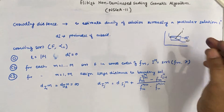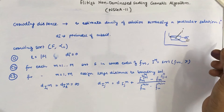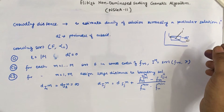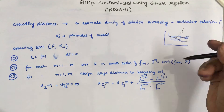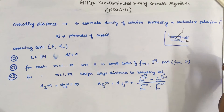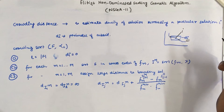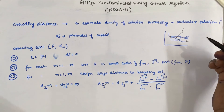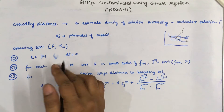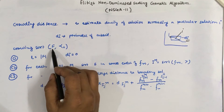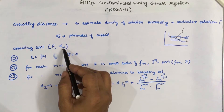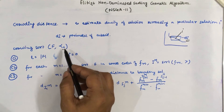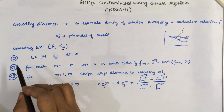In NSGA-2, we generally apply crowding sort based on the crowding distance, and the solutions which have higher crowding distance are selected to be included in the next iteration population. The crowding sort operator is used for crowding distance sorting.